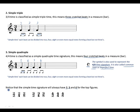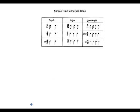The following can be found in simple time: two-two means two minim beats in a bar; two-four means two crotchet beats in a bar; two-eight means two quaver beats in a bar; three-two means three minim beats in a bar; three-four means three crotchets in a bar; three-eight means three quavers in a bar; four-two means four minims in a bar; four-four means four crotchets in a bar; four-eight means four quavers in a bar.